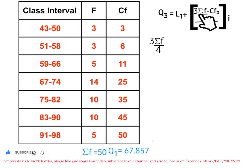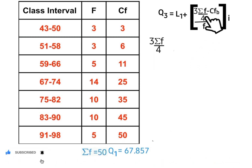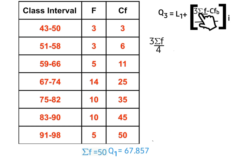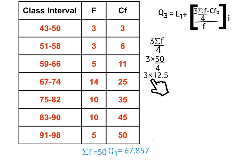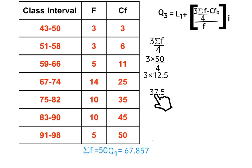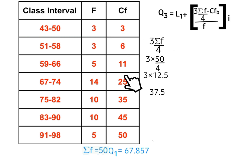To calculate the third quartile, we use the formula: L1 plus 3 times summation f over 4, minus cumulative frequency before the third quartile class, over frequency of the third quartile class, times class width. We compute 3 times summation f over 4: 3 times 12.5 equals 37.5. So the third quartile class is that class with cumulative frequency equal to or immediately greater than 37.5. Tracing our cumulative frequency column, we identify our third quartile class.